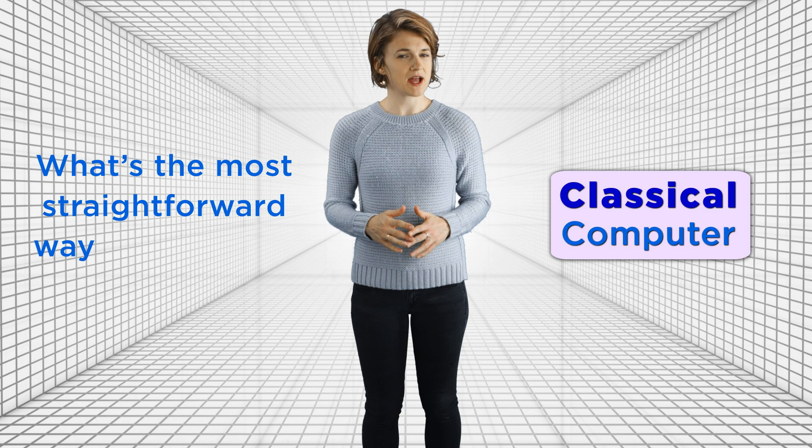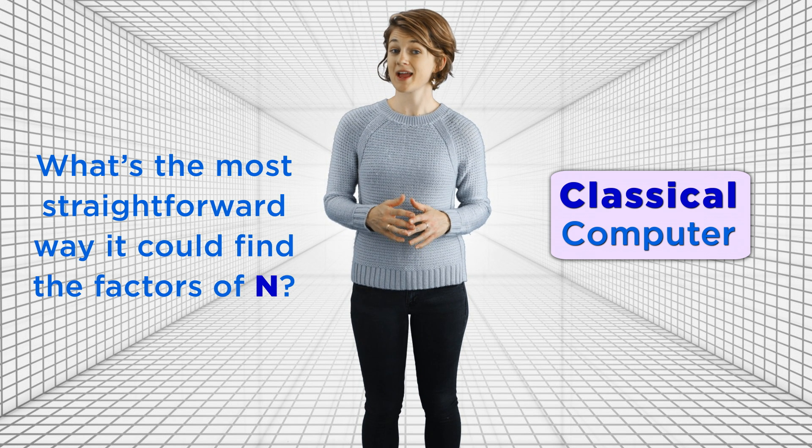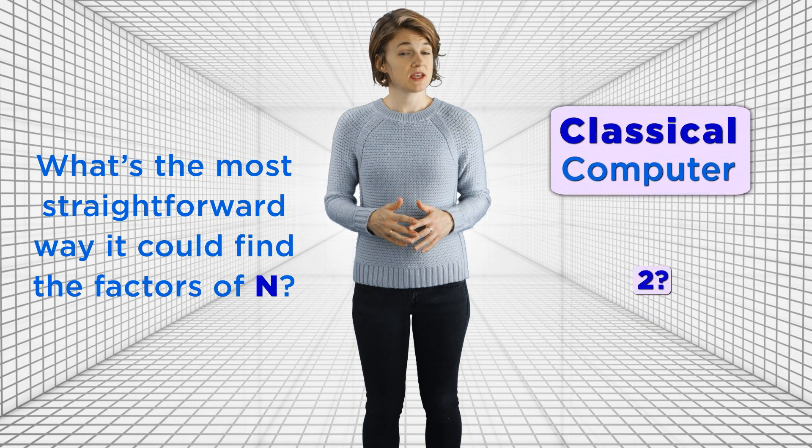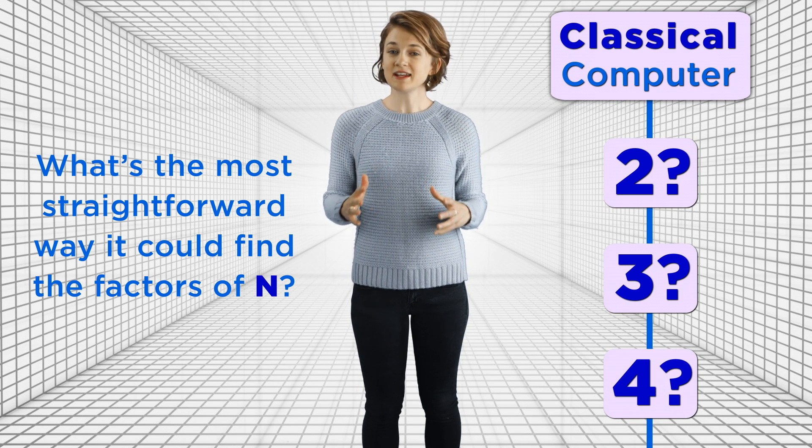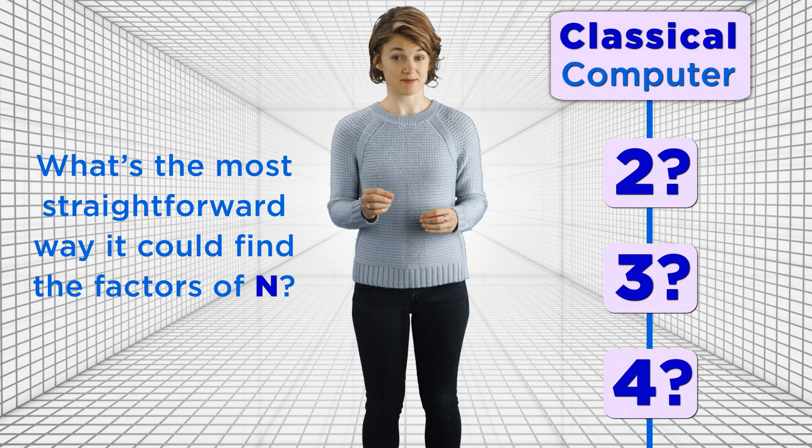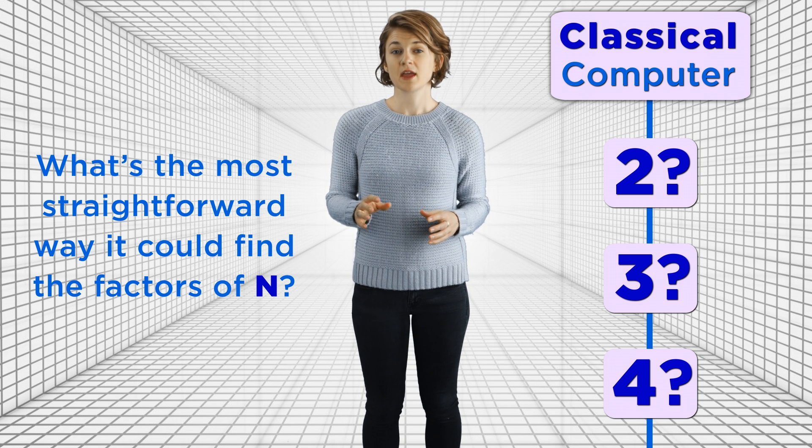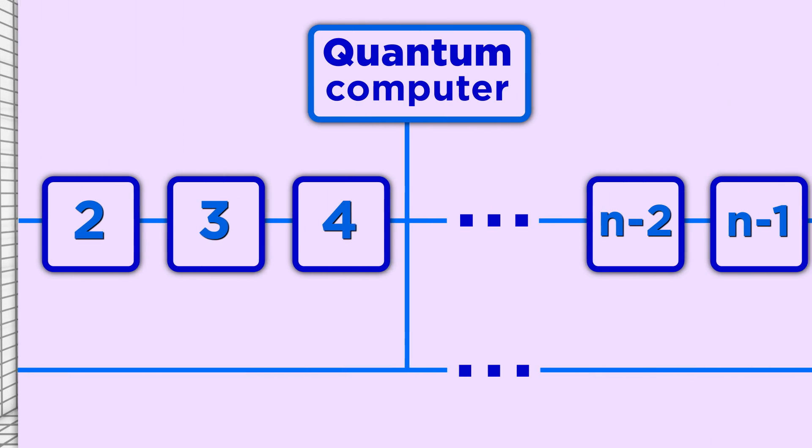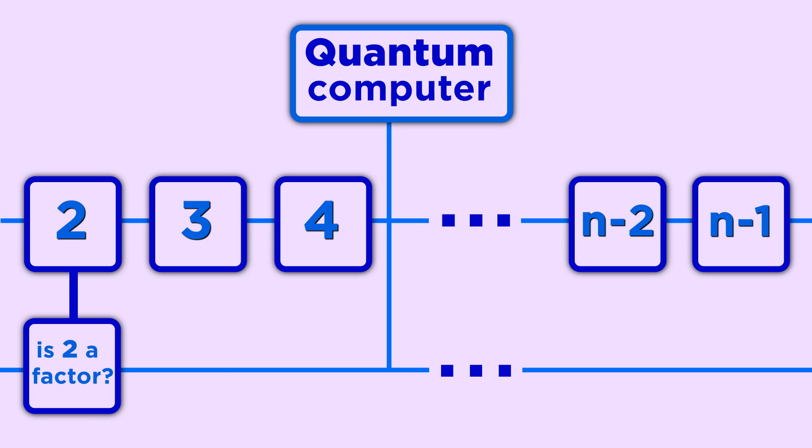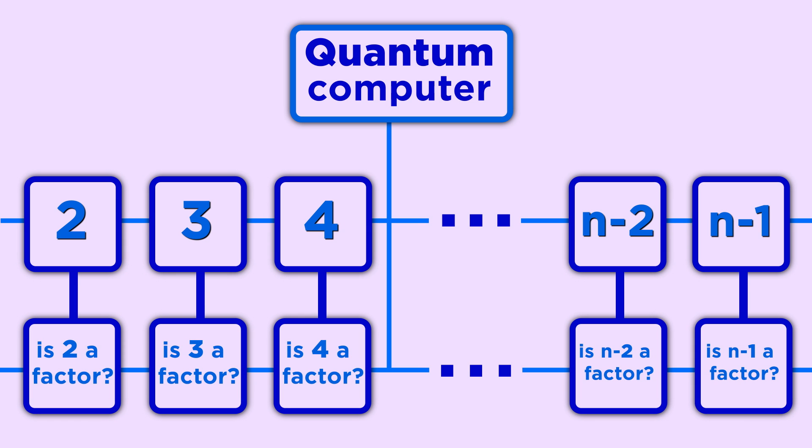We'll start by looking at one classical computer. What's the most straightforward way it could find the factors of a number n? Well, it could check. Is 2 a factor? Is 3 a factor? Is 4 a factor? And so on. But if n is big, this might take a lot of steps. Now, if a quantum computer is just a bunch of classical computers working in parallel, then we could have one computer check if 2 is a factor, another check if 3 is a factor, and so on. Then it would only require two steps. We've split the many steps of a classical computer among the many parallel computations of a quantum computer.